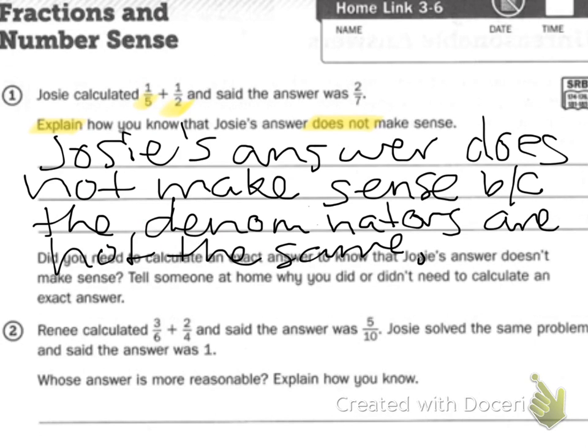Question 2 says, Renee calculated 3 sixths plus 2 fourths and said the answer was 5 tenths. Josie solved the same problem and said the answer was 1. Whose answer was more reasonable? I'm going to give you a hint. Draw a picture for this one. Draw a picture. It will help you. Also, you can look in your student reference book at your fraction lines and it will also show you why one is more reasonable than the other.